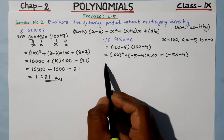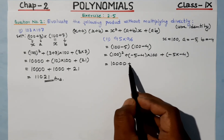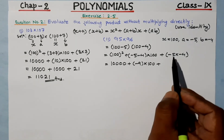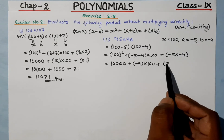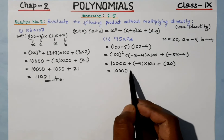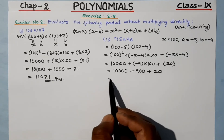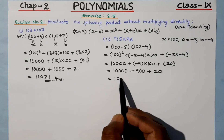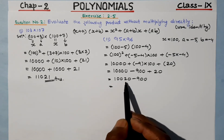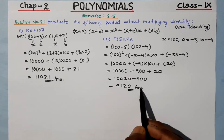Simplifying: 100² = 10,000. Then (−5 − 4) × 100 = −9 × 100 = −900. And (−5) × (−4) = +20. So the answer is 10,000 − 900 + 20 = 9,120.